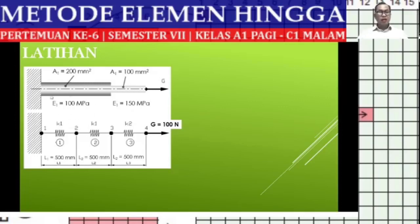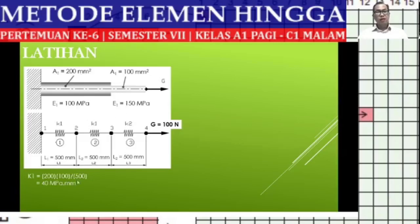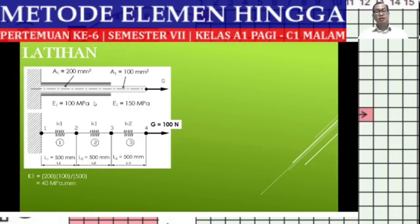Since this is a structural analysis, we use K = AE/L. For K1: A = 200, E = 100 MPa, L = 500, giving K1 = 40. You can verify at home that megapascals pair with millimeters, while pascals pair with meters — we won't elaborate here to save time.